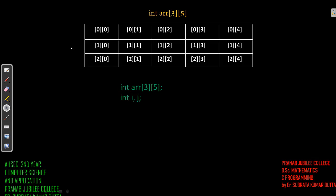First we have to declare the array. The array will be of data type int, name will be arr, and it will have three rows and five columns — as discussed in the last video, this three represents number of rows and this five represents number of columns. So it is representing this matrix or array.